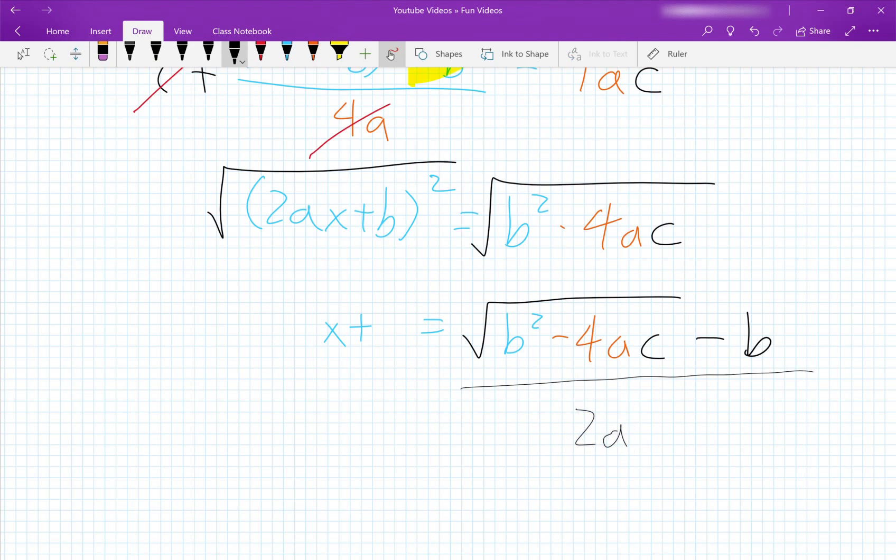And we get this neat equation of x equals the square root of b squared minus 4ac minus b over 2a.